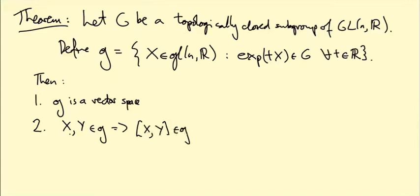The claim is it does make sense, so that if X and Y are in little g, then their bracket is also in little g. That will allow us to state the Baker-Campbell-Hausdorff formula in this setting.